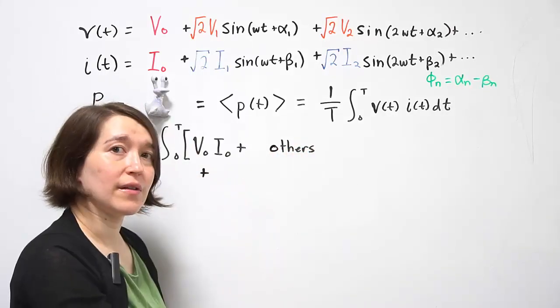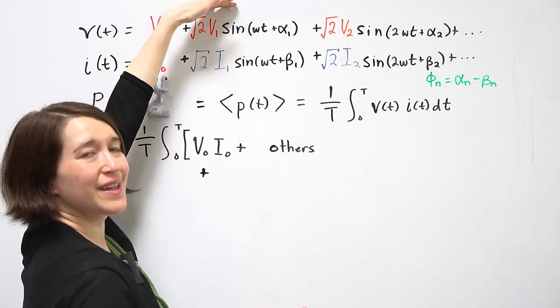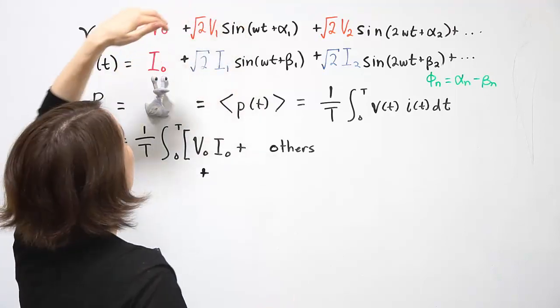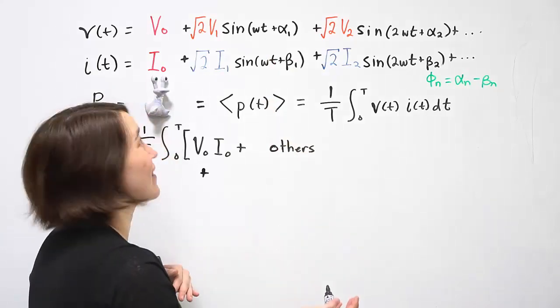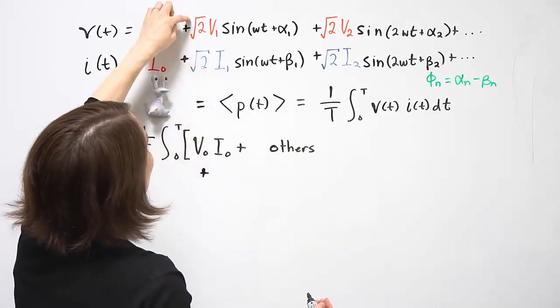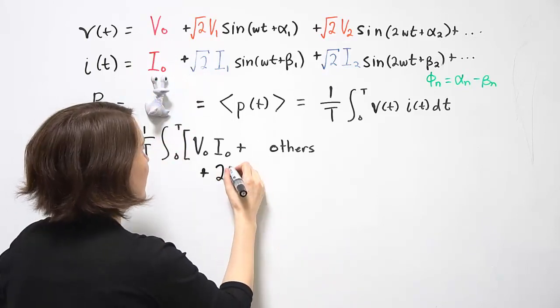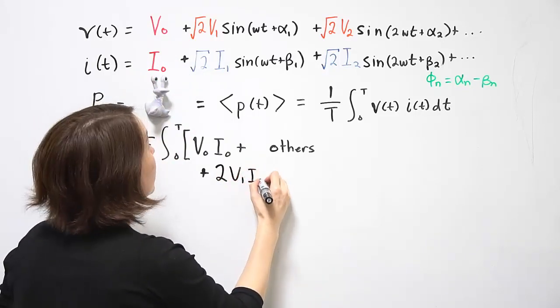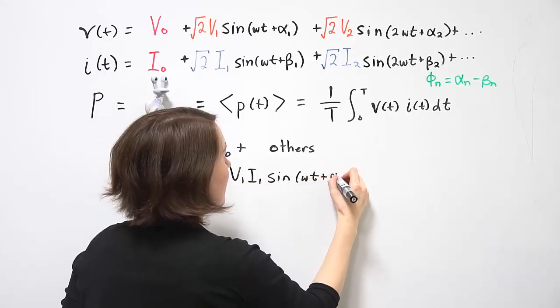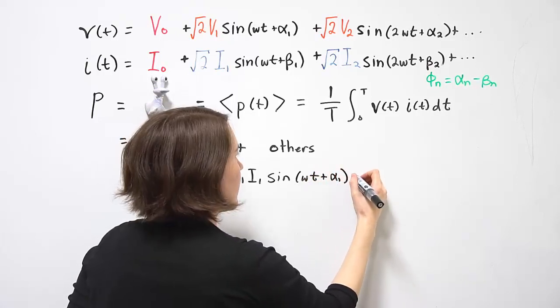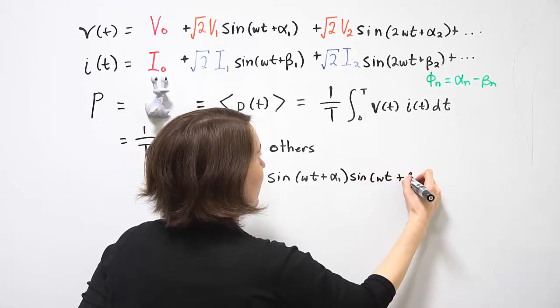Then we can move on to the next term. So this term can then be the fundamental for the voltage, can be multiplied by this. Because there's a sign, it's going to be zero. We're going to count that as others. Then we're going to multiply these two together. These will come out as something non-zero. The 2v1i1 sine of omega t plus alpha 1, and sine multiplied by sine omega t plus beta 1.